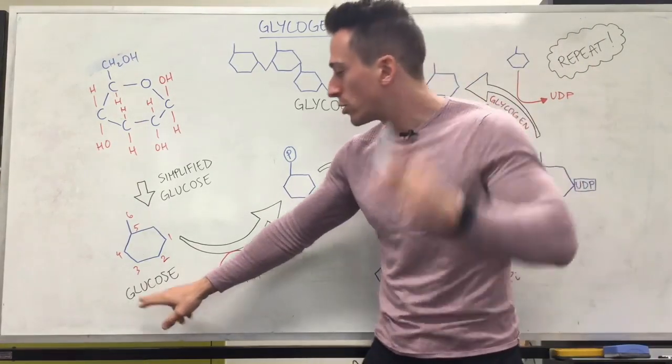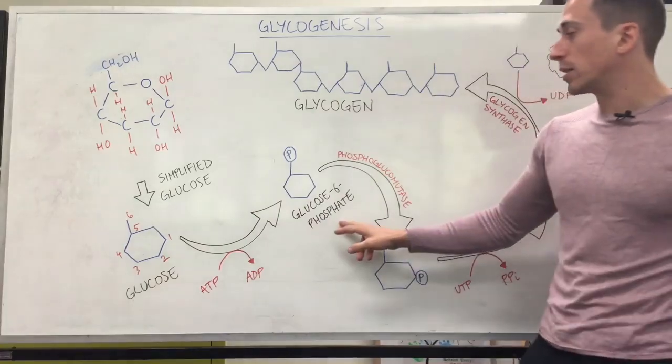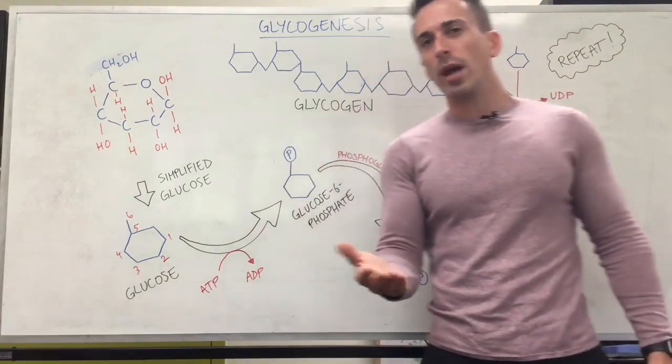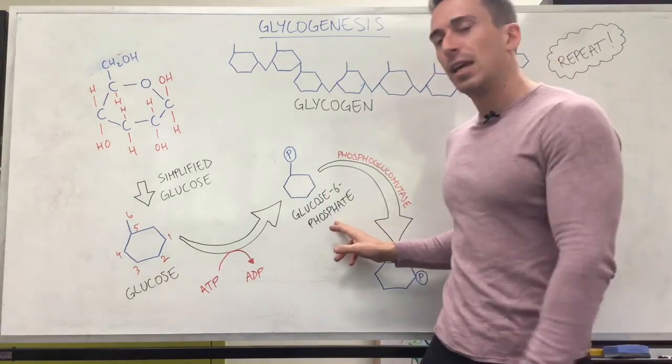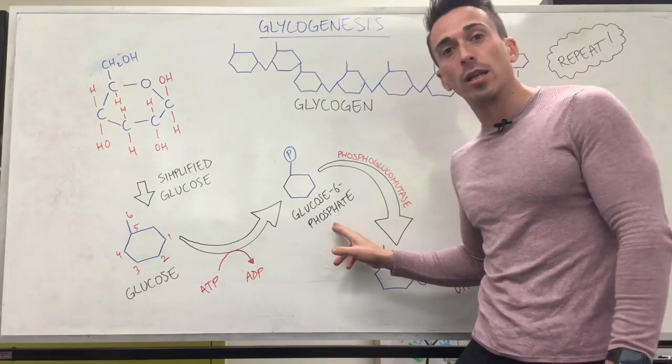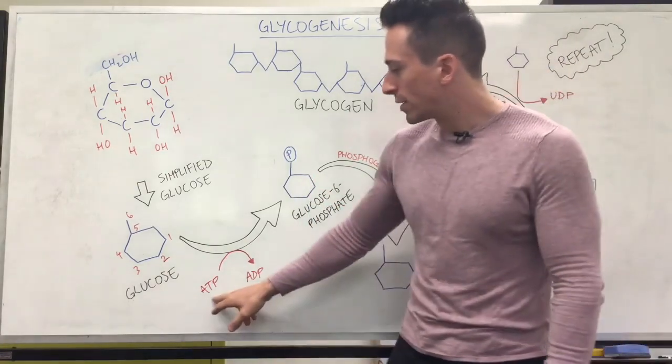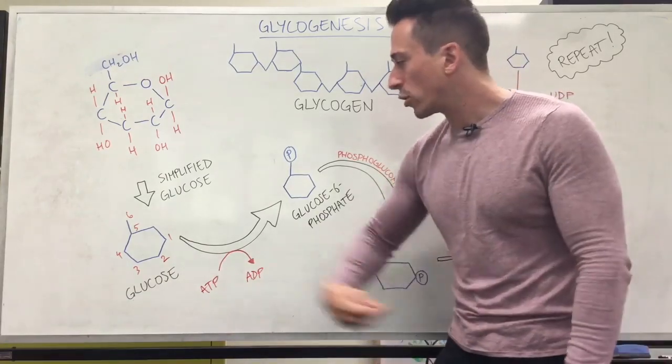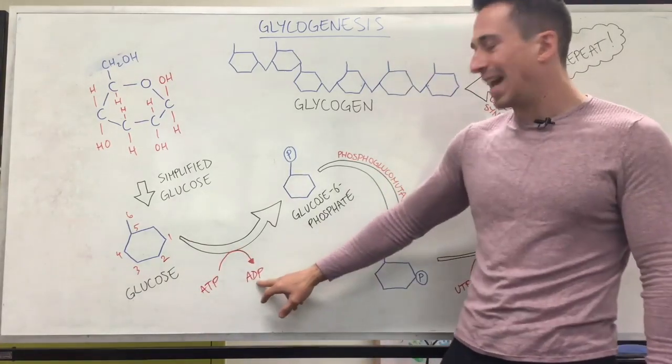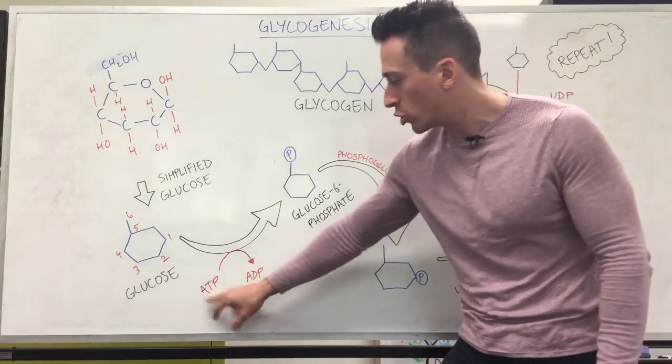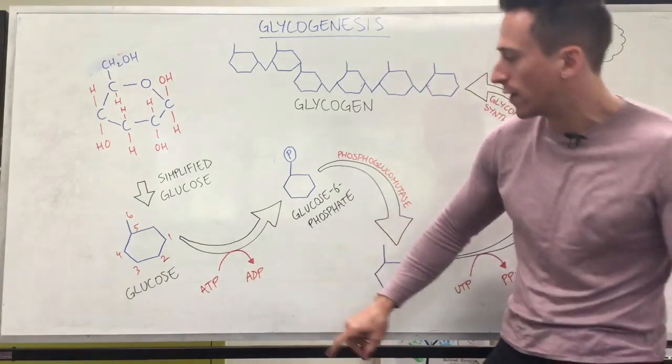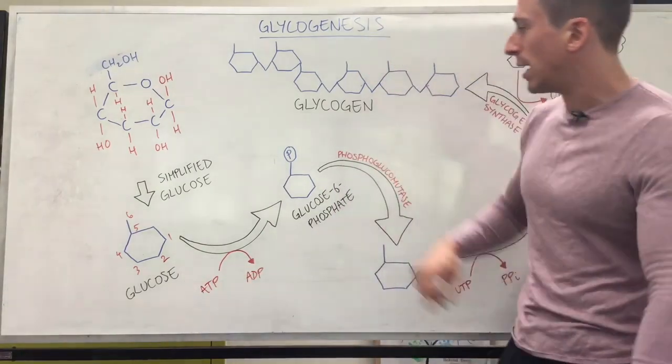So here's glucose. First step is we need to turn this glucose into something called glucose-6-phosphate. And you're probably aware that glucose-6-phosphate is the first step in the glycolytic pathway. It's also the first step in creating glycogen. How do we do it? We take some ATP, give that glucose one of those phosphates. We now have ADP, adenosine triphosphate to adenosine diphosphate, and we snap that ATP here.